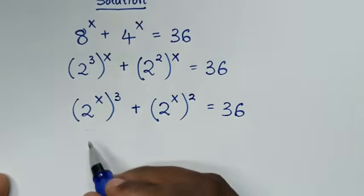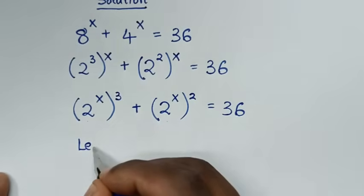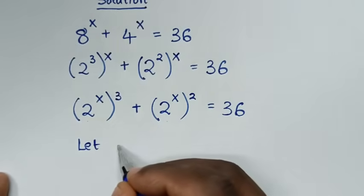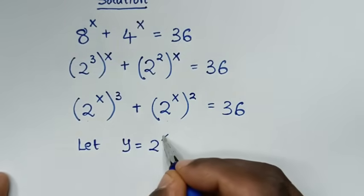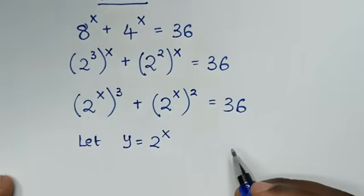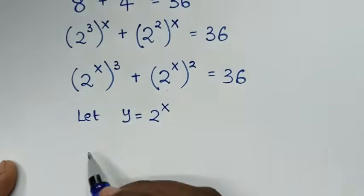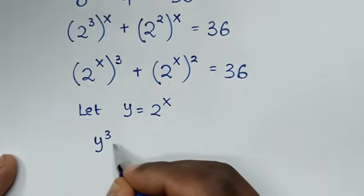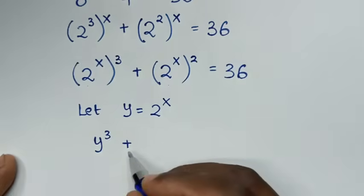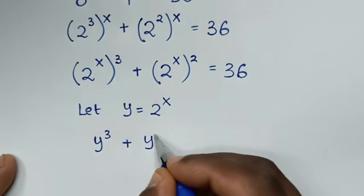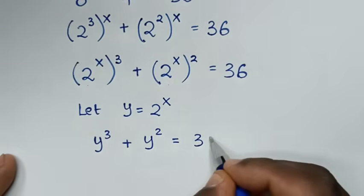From here, 2^x is common. So we let y equal to 2^x. Our equation will then be y³ plus y² equals 36.